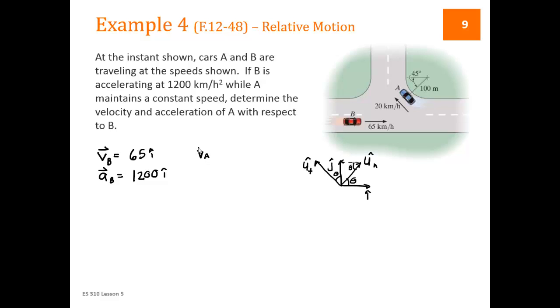So VA is going to equal 20, which is its speed, in the tangential direction. And nothing in the normal direction, because velocities are never in the normal direction. AA, we're told there is no change in speed. It's a constant speed, so there's no tangential direction. And the normal direction is going to be V squared over rho in the normal direction. Well, V is given is 20. So that's 20 squared over 100 meters. The 20 was in kilometers, so this is going to be 0.1. So A is 4000 in the normal direction.